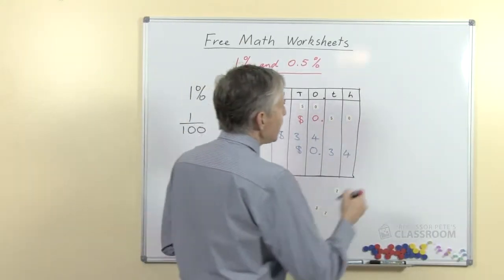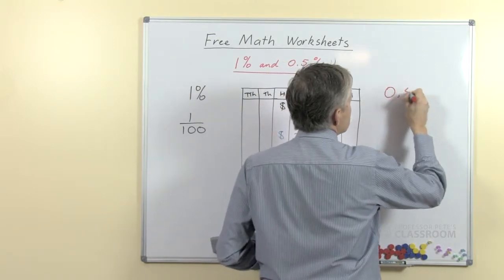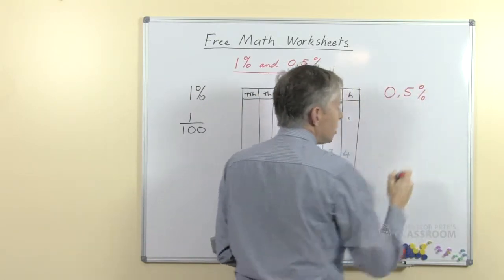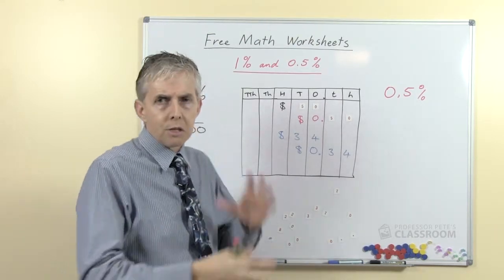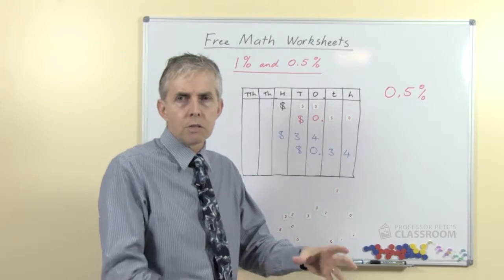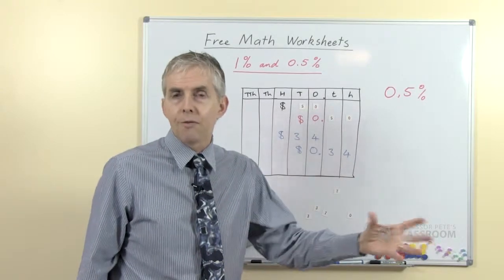Now taking zero point five percent of course is an extension of one percent, so we would approach it from that perspective. So once the students have seen that one percent is one hundredth, half a percent must be half of that.